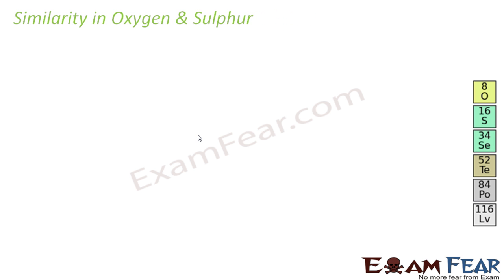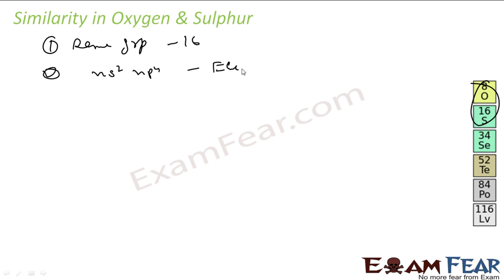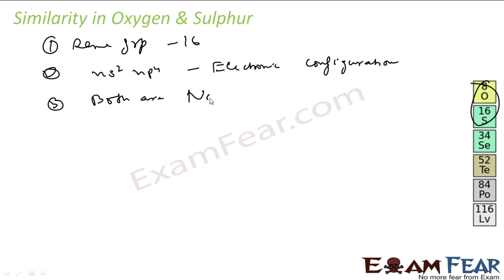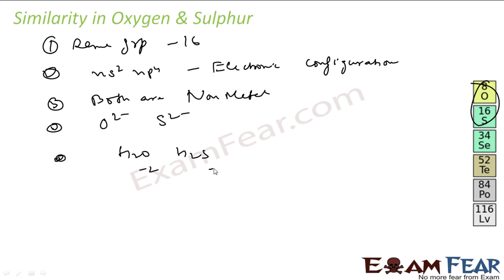Let's see some similarities between oxygen and sulfur. First, both are part of the same group — Group 16. They have the same electronic configuration: ns² np⁴. Both are non-metals. Both form divalent ions: O²⁻ and S²⁻. Both form hydrides — H₂O and H₂S — and in both these hydrides the oxidation state of the element is −2.